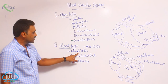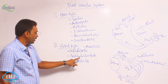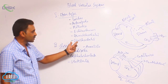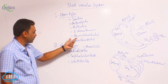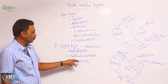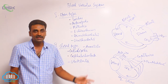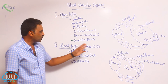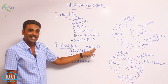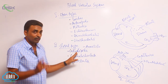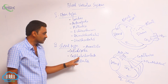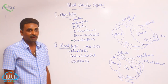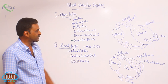Among molluscs, the closed type is seen only in cephalopoda. Among chordates, the first group urochordates shows the open type, while the remaining two groups — cephalochordates and vertebrates — show the closed type. In summary, the closed type is seen in all annelids except leeches, only cephalopods among molluscs, and cephalochordates and vertebrates among chordates.